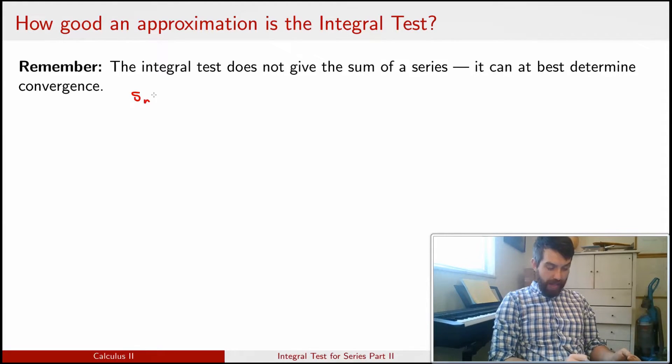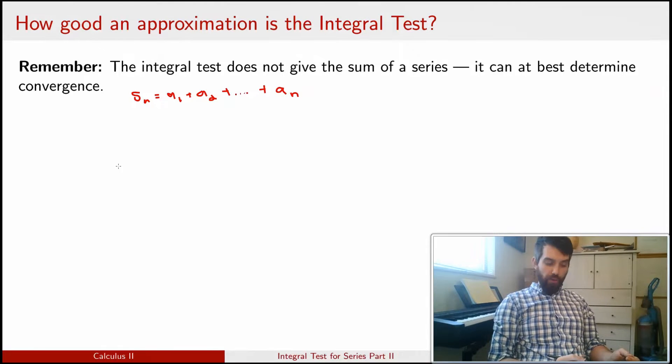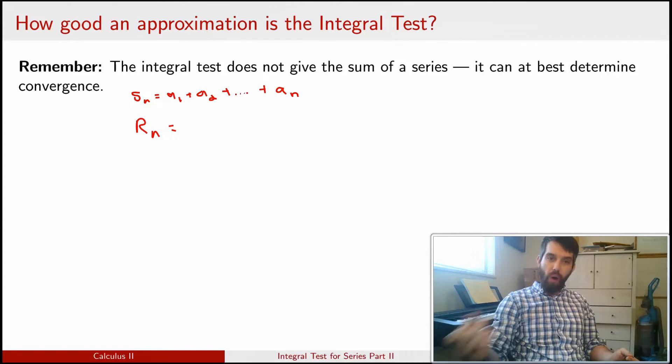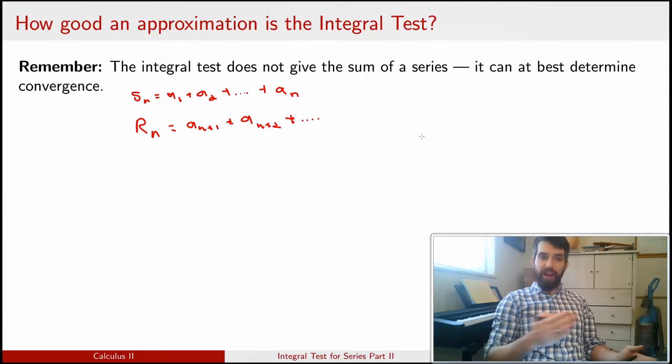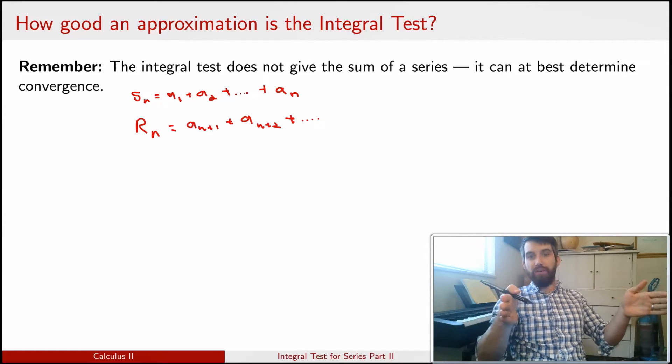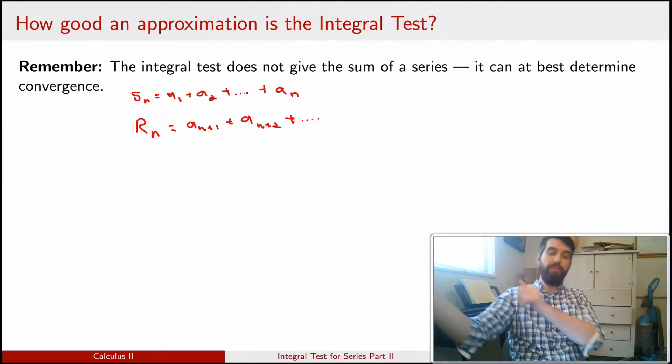We've previously seen that Sn was our standard notation for the partial sums, and it represented a1 plus a2 plus all the way down to an. What I'm going to define now is something new, and I'm going to call it the remainder, Rn. It's everything beyond the partial sum of Sn. It's the an+1, plus an+2, and so on. While the partial sum is the finite sum from 1 all the way up to n, the remainder is all the other things from n+1 all the way up to infinity.